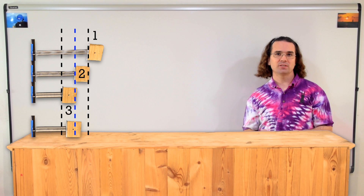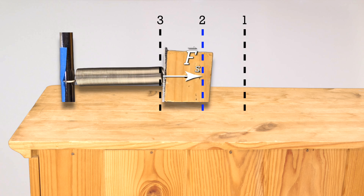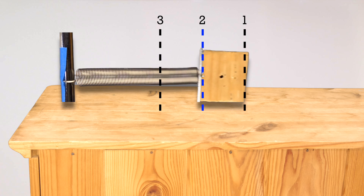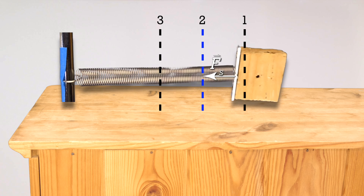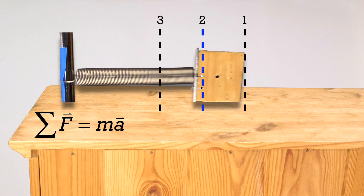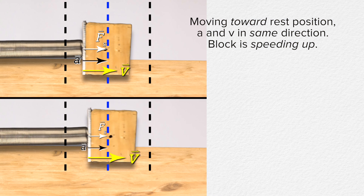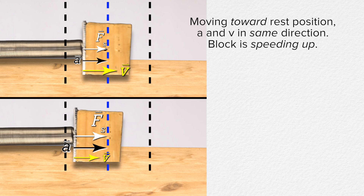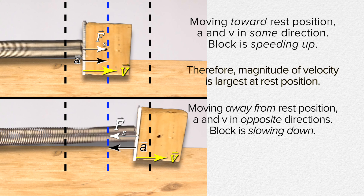Now let's go back to velocity for a moment. Looking at the force of the spring in the demonstration, Olivia, how does the changing force of the spring show that the magnitude of the velocity is greatest at position two? Well, the spring force is always directed towards the equilibrium position. Therefore, according to Newton's second law, the spring force is always accelerating the block towards the equilibrium position. That means if the block is moving towards the equilibrium position, the acceleration is in the same direction as the velocity and is therefore speeding up the block. But if the block is moving away from rest position, the acceleration is in the opposite direction as the velocity and is therefore slowing down the block. So the magnitude of the maximum velocity of the block must be at rest position.